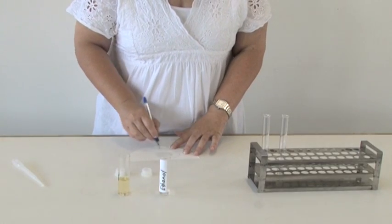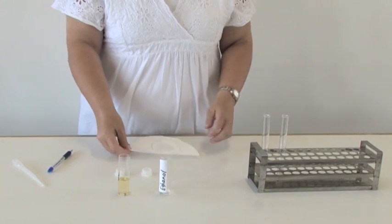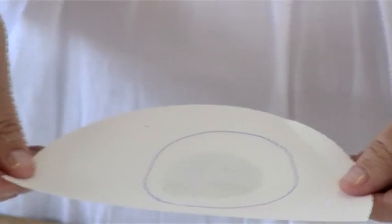You may draw a circle around the wet patch on the filter paper to indicate where the stain would be at this stage.